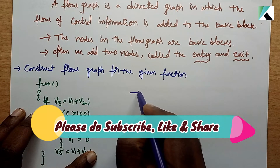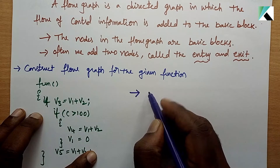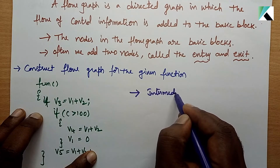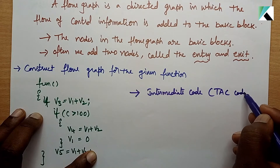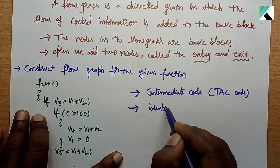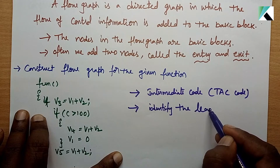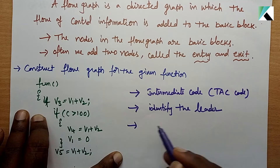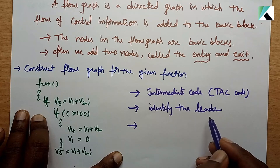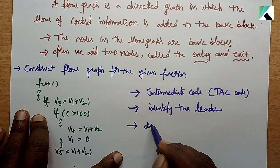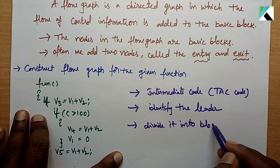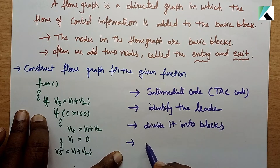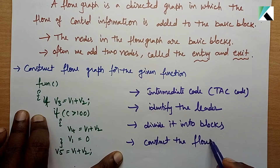First, write the intermediate code — intermediate code is nothing but three-address code (TAC). Then identify the leaders, then divide it into basic blocks, and finally construct the flow graph.